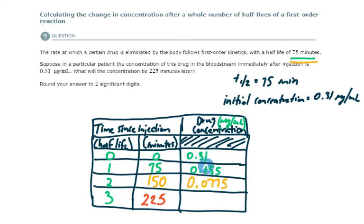So the first half-life, this was halved. Second half-life, that was cut in half. At the third half-life, this is cut in half. So 0.0775 divided by two,